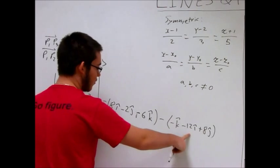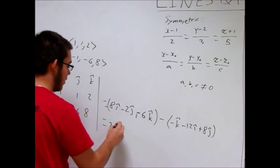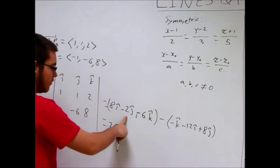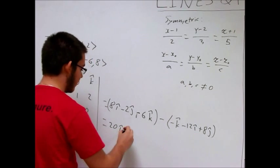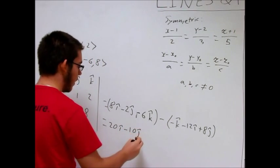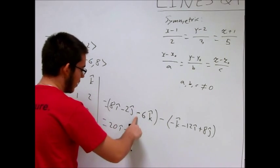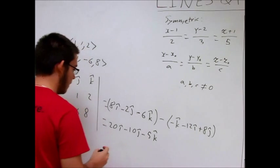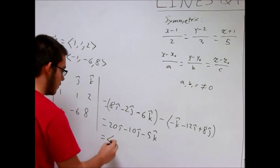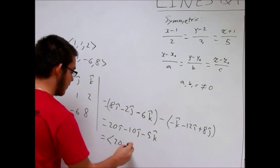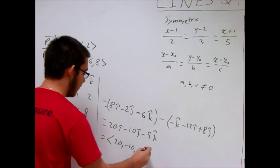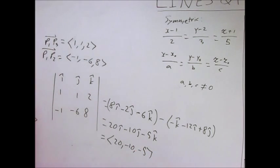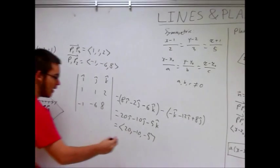So if we add these together, eight i, minus negative 12 i, so that's 20 i. Negative two j, minus eight j, is negative 10 j. Negative six k, minus negative k, is negative five k. Or just 20, negative 10, negative five. So that is a normal vector to this plane, this is N.